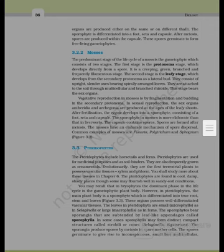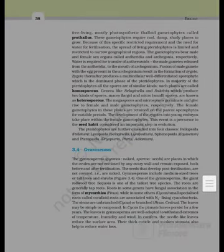The sporophytes bear sporangia subtended by leaf-like appendages called sporophylls. In some cases, sporophylls may form distinct compact structures called strobili or cones, as in Selaginella and Equisetum. The sporangia produce spores by meiosis in spore mother cells. The spores germinate to give rise to inconspicuous, small but multicellular, free-living, mostly photosynthetic, thaloid gametophytes called prothallus. These gametophytes require cool, damp, shady places to grow. Because of these specific requirements and the need for water for fertilization, the spread of living pteridophytes is limited to narrow geographical regions.